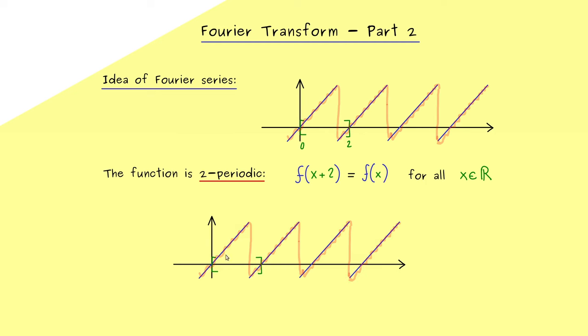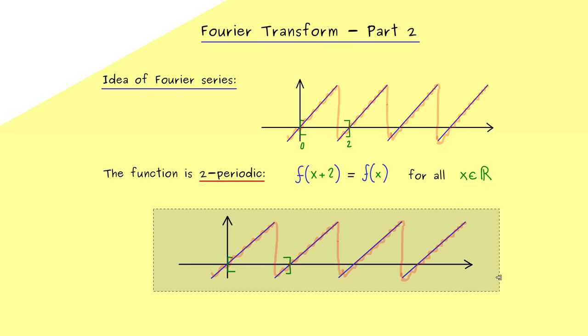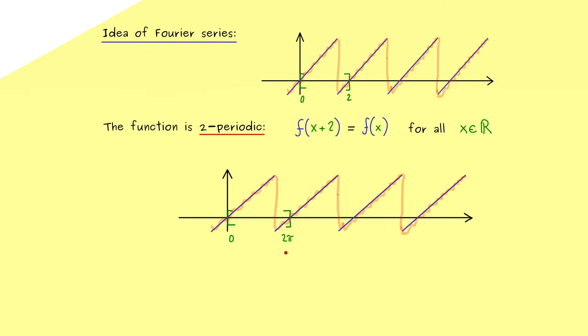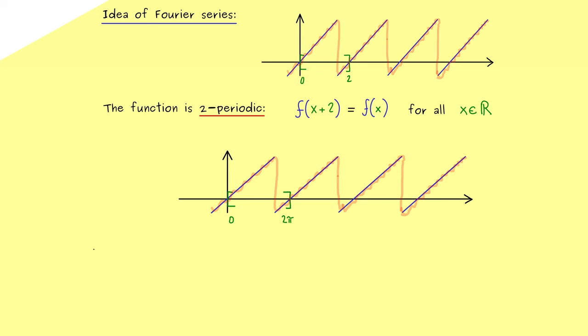Hence, a sensible thing we could do now is to take the function here and stretch it into the x direction until it's 2π-periodic. This means we stretch or compress it until this interval here has the length 2π. It makes sense because the standard cosine and sine functions are also 2π-periodic. Therefore we don't change any essential thing, but we make the whole notation simpler.